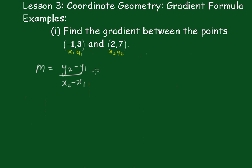Now that will be equal to 7 take away 3 over 2 take away negative 1. Just watch the signs. 7 take away 3 is 4, and 2 take away negative 1 is 3.